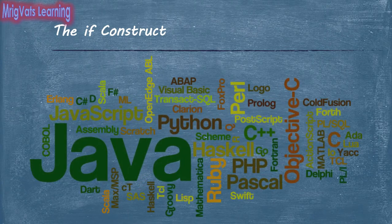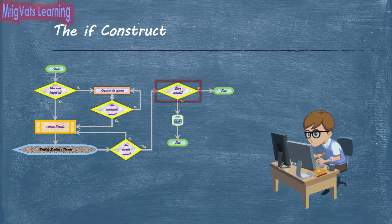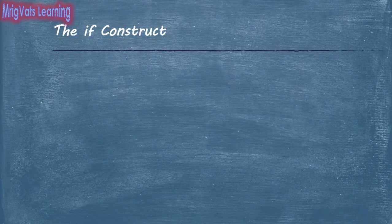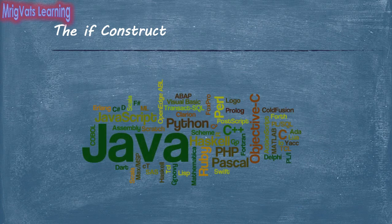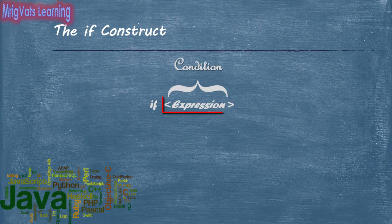In most of the programming languages, to make a decision, you can use the if construct. If you recall the decision element of the flowchart, it maps to the if construct in a program. The if construct helps you to make a decision depending on a condition. Across programming languages, the if construct is built of these components. The condition component is used along with the if keyword, where you use an expression to check if the condition is true or false, generally by using a relational operator or a boolean expression.